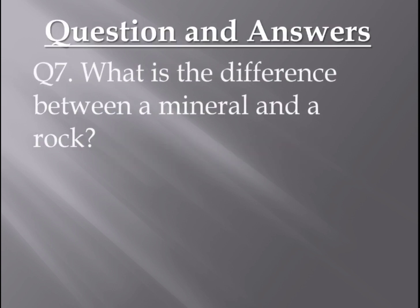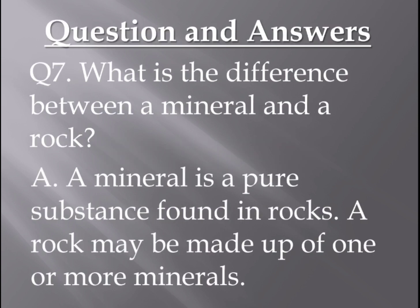Question: What is the difference between a mineral and a rock? A mineral is a pure substance found in rocks, but a rock is made of one or more minerals. Some rocks have only one mineral, some rocks have several minerals, and most rocks have several minerals. In a rock you can find many different kinds of mineral, but a mineral is a pure substance found in rocks.